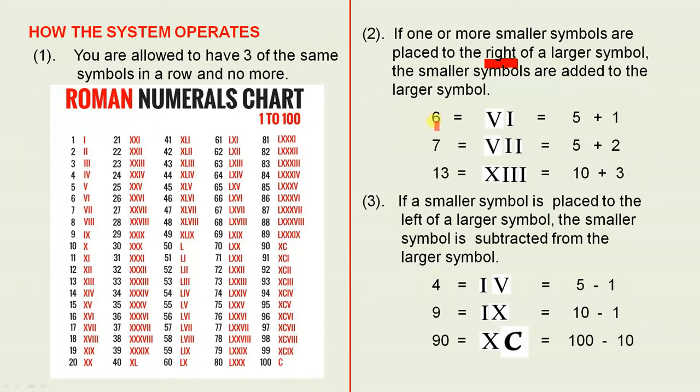This is what this means. In our system, the number 6 is VI, meaning V is 5 plus 1 gives you 6. V plus 1 because this is to the right of the V, so 5 plus 1 gives you 6. 7 is the 5 plus another 2, 5 plus 2. 13 is the 10 plus another 3. That's the convention. It's quite straightforward.